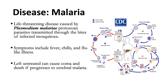The last protozoal disease is malaria, a life-threatening disease caused by Plasmodium species, transmitted through the bites of infected mosquitoes. Symptoms include fever, chills, and flu-like illness. If left untreated, it can cause coma and death if it progresses to cerebral malaria. The malaria parasite life cycle involves two hosts: the Anopheles mosquito and the human. The life cycle starts during a blood meal from a malaria-infected female Anopheles mosquito, where sporozoites are inoculated into the human host.